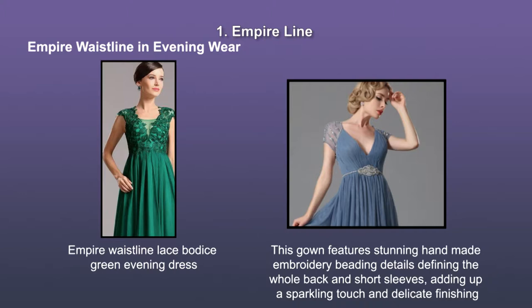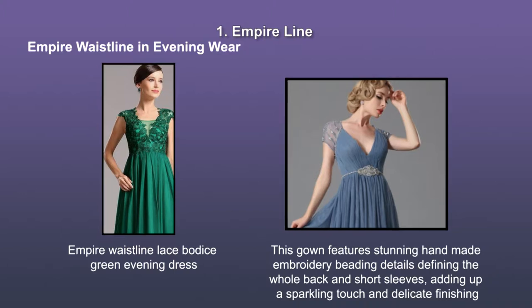The red dress has an empire waistline with lace bodice. On the right is a gown featuring stunning handmade embroidery, beading details, defining the whole back and short sleeve, adding a sparkling touch and delicate finishing. The empire waistline has a beaded chain that gives a comfortable feel and yet a glamorous look.